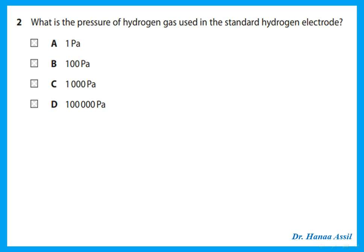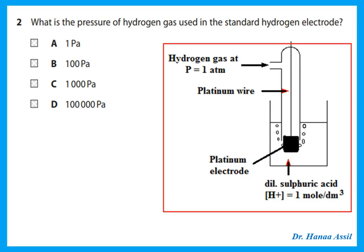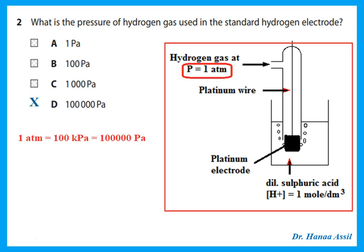The next question asks: what is the pressure of hydrogen gas used in the standard hydrogen electrode? The standard hydrogen electrode is the reference we use in electrochemical cells. Hydrogen gas enters at a pressure of one atmosphere. The choices don't include one atmosphere, but remember that one atmosphere equals 100 kPa or 100,000 Pascal. So the hydrogen in the standard hydrogen electrode is at a pressure of one atmosphere or 100,000 Pascal.